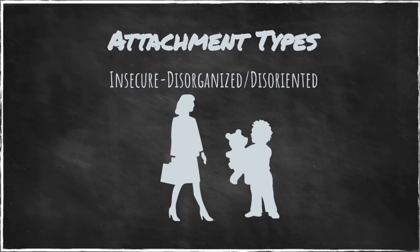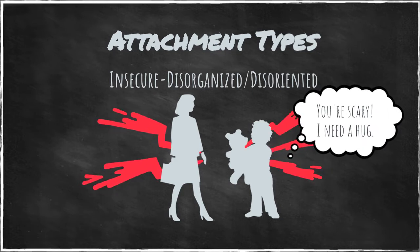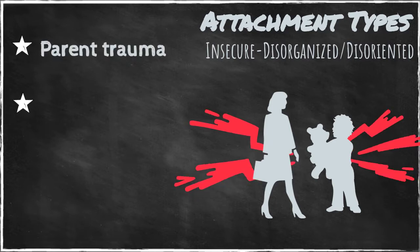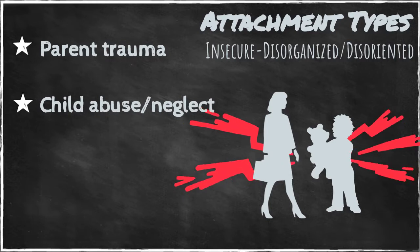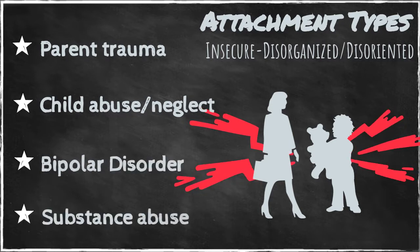Children with disorganized disoriented attachment find parental behavior frightening. The infant's attempt to use attachment behavior to reduce distress dissolves when the source of comfort is also a source of fear. Two factors contribute to the development of disorganized attachment: a history of unresolved trauma in the parent, and direct maltreatment of the child by the parent. Other parental factors include bipolar disorder and active alcoholism or drug addiction.